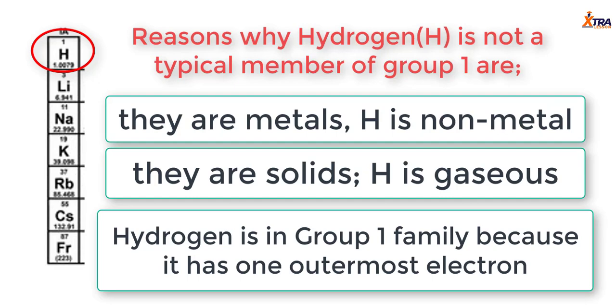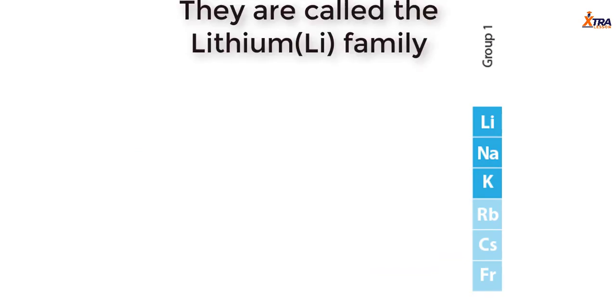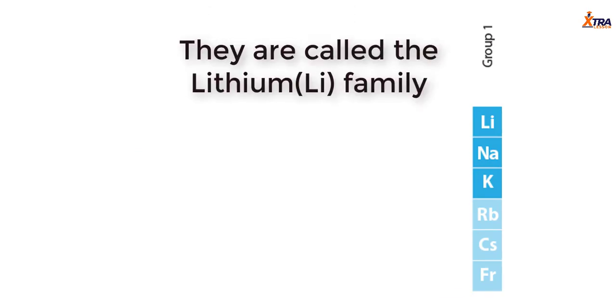When we mention group 1 of the periodic table, we usually do not mention hydrogen — it is not a typical group 1 element; it is only placed there for simplicity reasons. Now let's talk about the other members of group 1. Lithium is the first member, and that is why we call the family the lithium family.